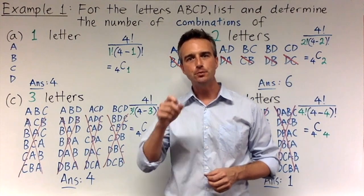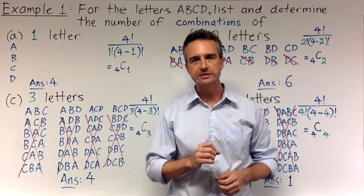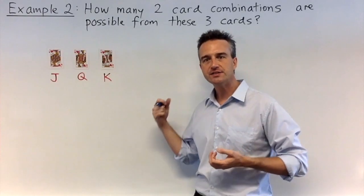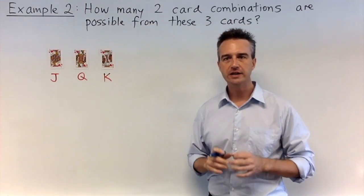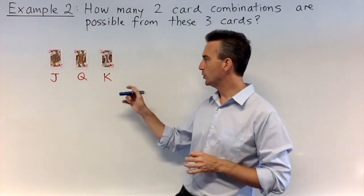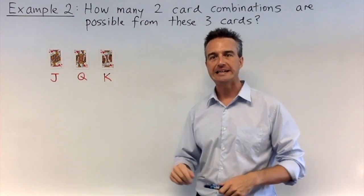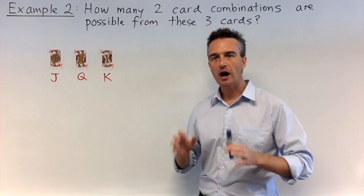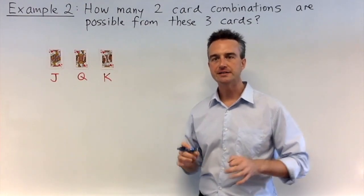Let's now take a look at example two, and we'll look at that jack, queen, and king problem we looked at in the beginning. We're going to look at our card problem again, and just verify that we get the same answer by using the nCr formula. How many two card combinations are possible from the three cards, the jack, queen, and king of hearts? Well, we are choosing from three cards, which means n is three. And we're going to select two cards, so r is going to be two. So our answer is going to be 3C2.